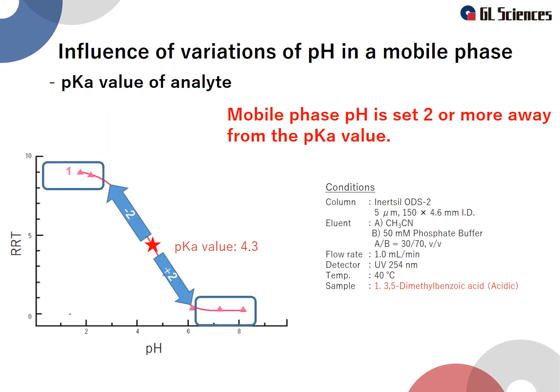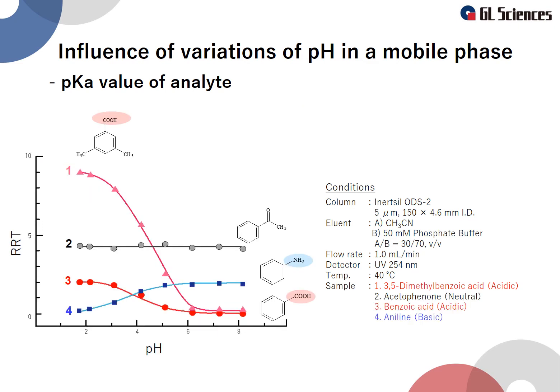We recommend setting the pH of the mobile phase to be 2 or more above or below the pKa value of the analyte. In this range, it does not significantly affect the retention time even when the mobile phase pH slightly changes. The fluctuation range of retention time with pH values differs between analytes. As shown here, neutral compounds do not fluctuate regardless of pH.